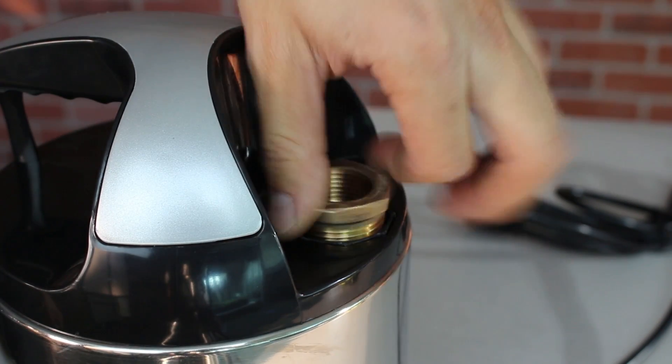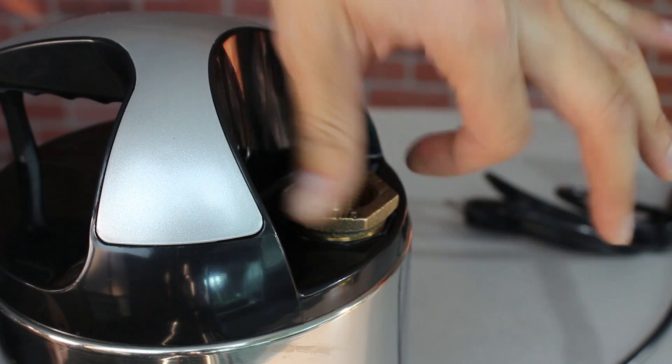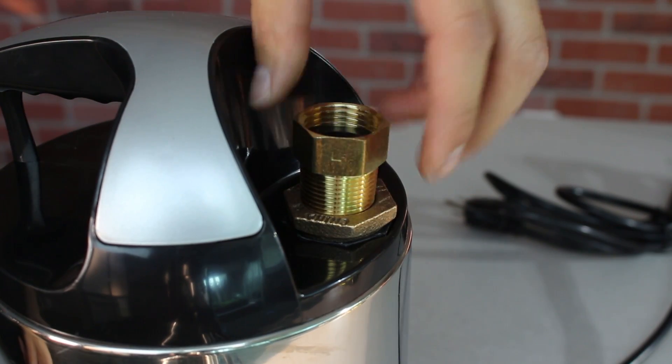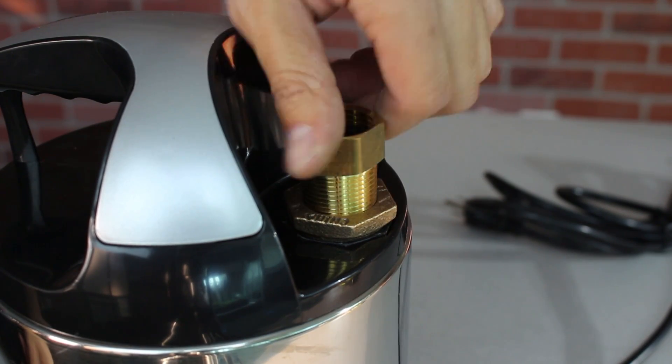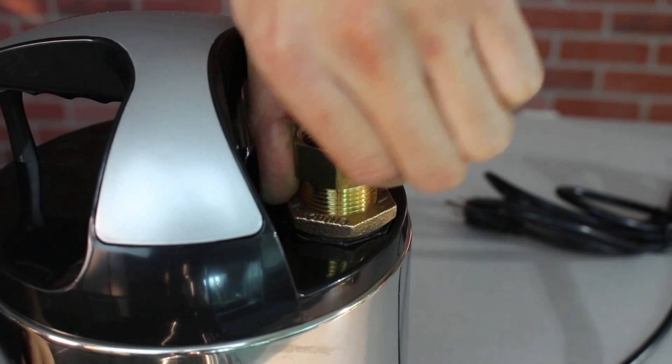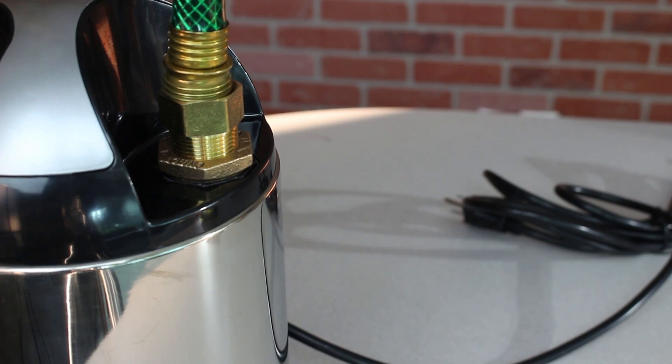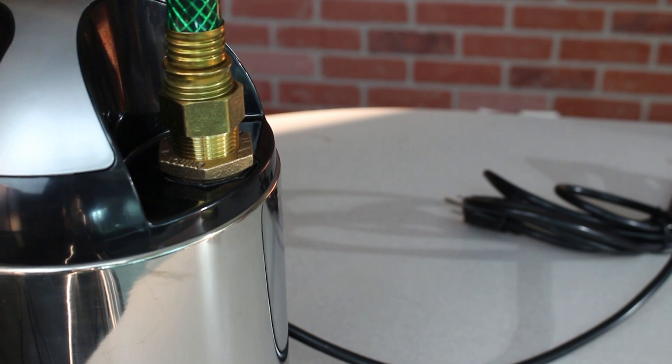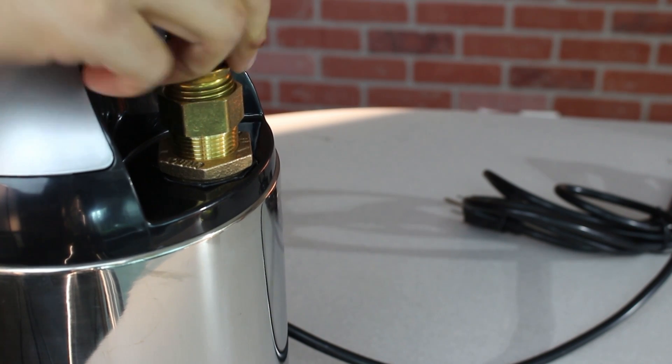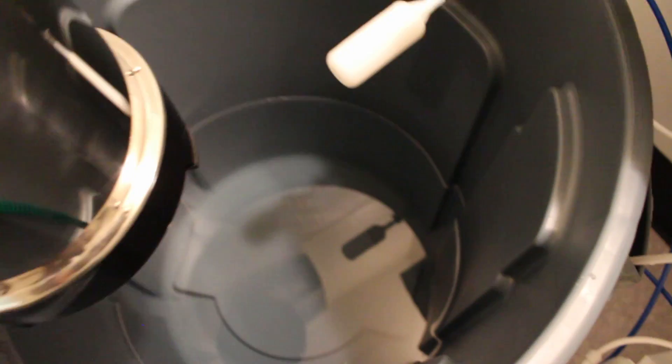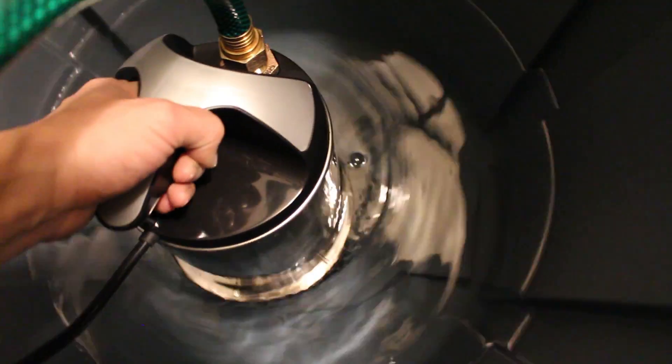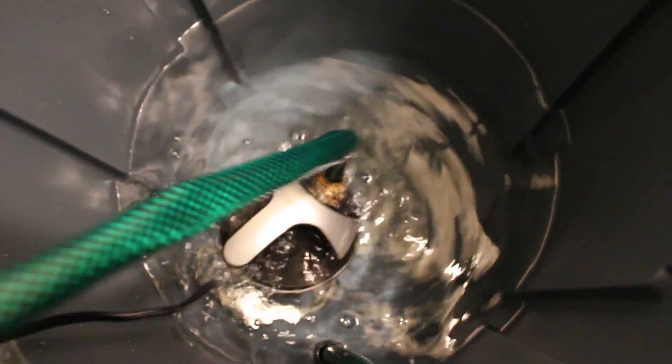Next, we'll fit the adapter onto our pump so we can attach our garden hose to it. After you're done, put the pump into your reservoir, and now you can pump filtered water straight into your irrigation system.